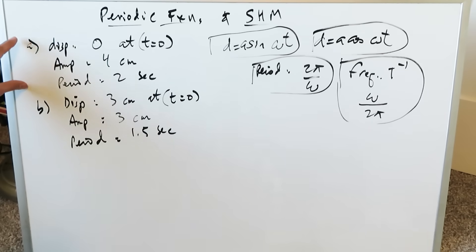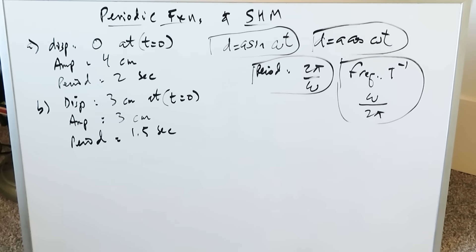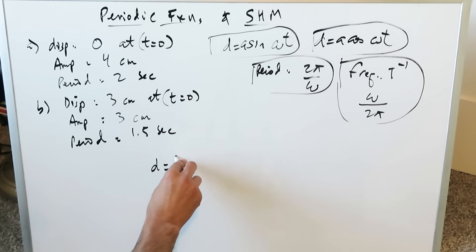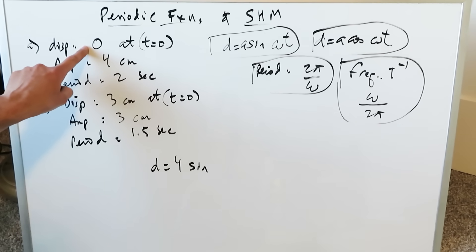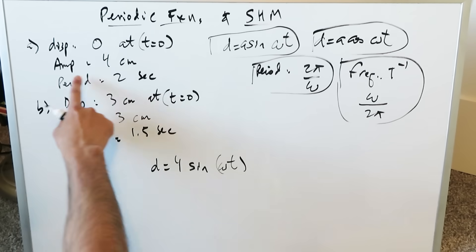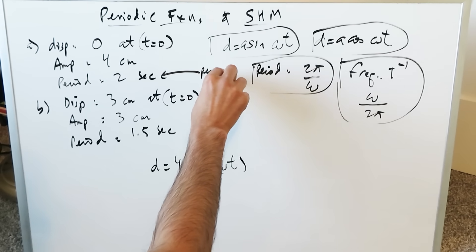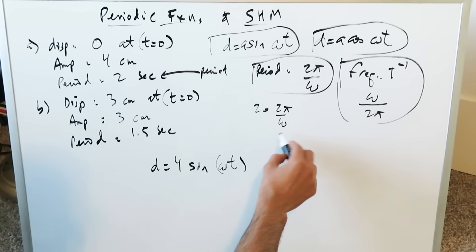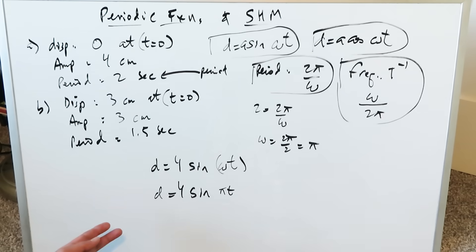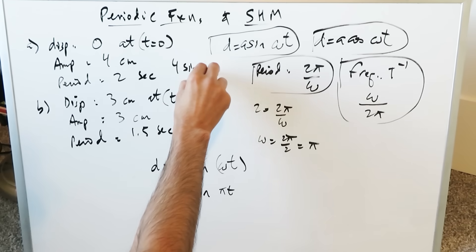Question one: an object undergoes simple harmonic motion with displacement zero at time t = 0, amplitude 4 centimeters, and period 2 seconds. Since displacement is zero at t = 0, we use sine. The equation is d = 4·sin(ωt). To find ω: period = 2π/ω → 2 = 2π/ω → ω = 2π/2 = π. The complete equation is d = 4·sin(πt), or equivalently y = 4·sin(πt).